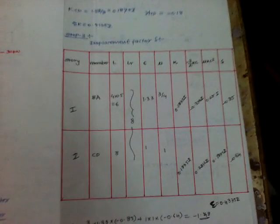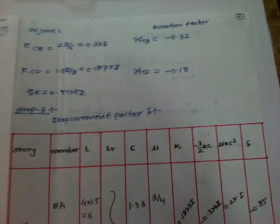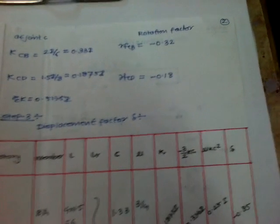This is the displacement factor. So this is the displacement factor calculation consisting of in a table: story member, L, L_R, C, mu, K, minus 3 by 2 K C, mu K C square, and delta.